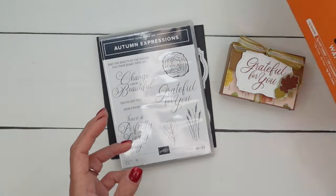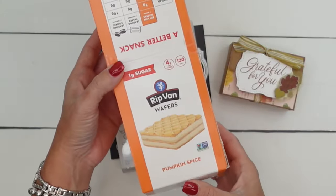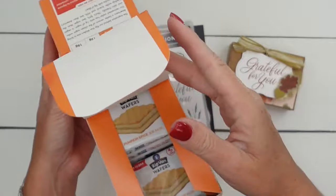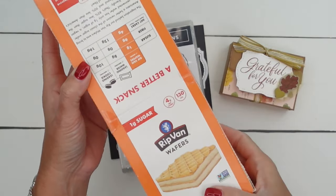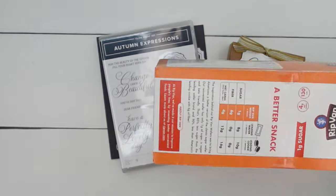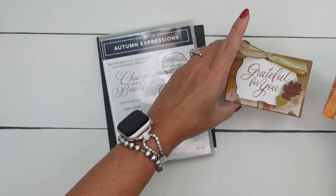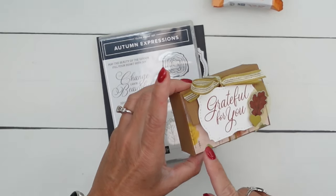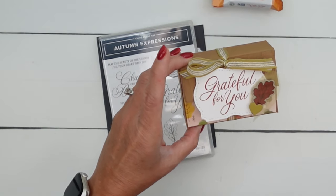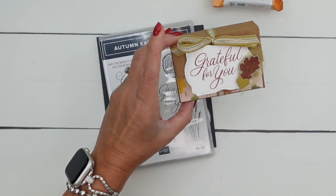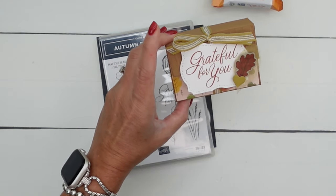Inside the box are these really yummy Rip Van Wafer Pumpkin Spice. They actually say low carb on them, but I have tasted them and they are delicious. You get a whole box of them. I've linked it from Amazon on my blog today. Two of them will fit inside the box. And then I've got the Autumn to Remember Designer Series paper that is in our scrapbooking section online. It's a really cute paper that you really should check out.